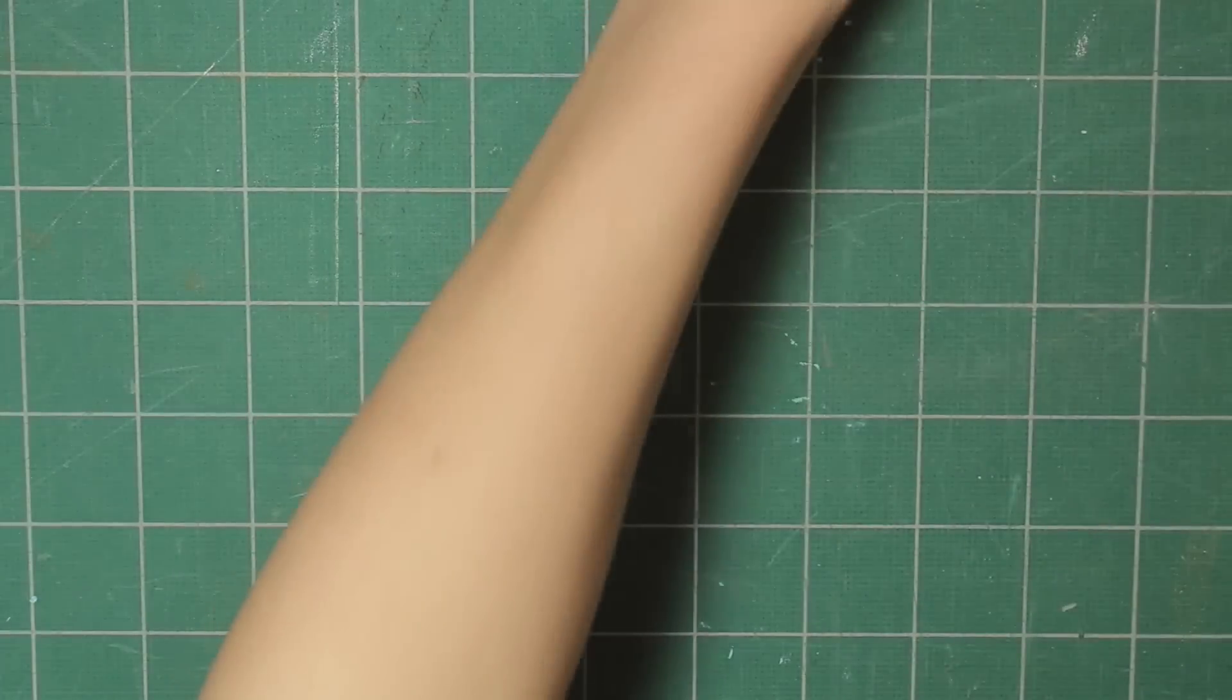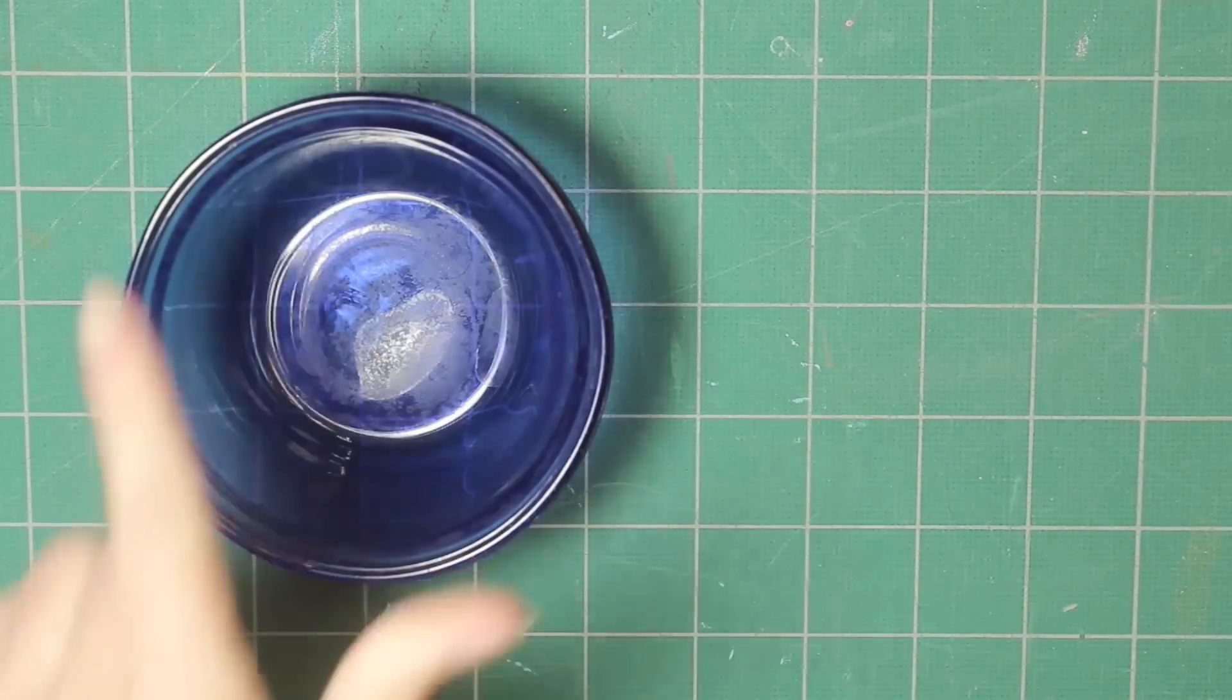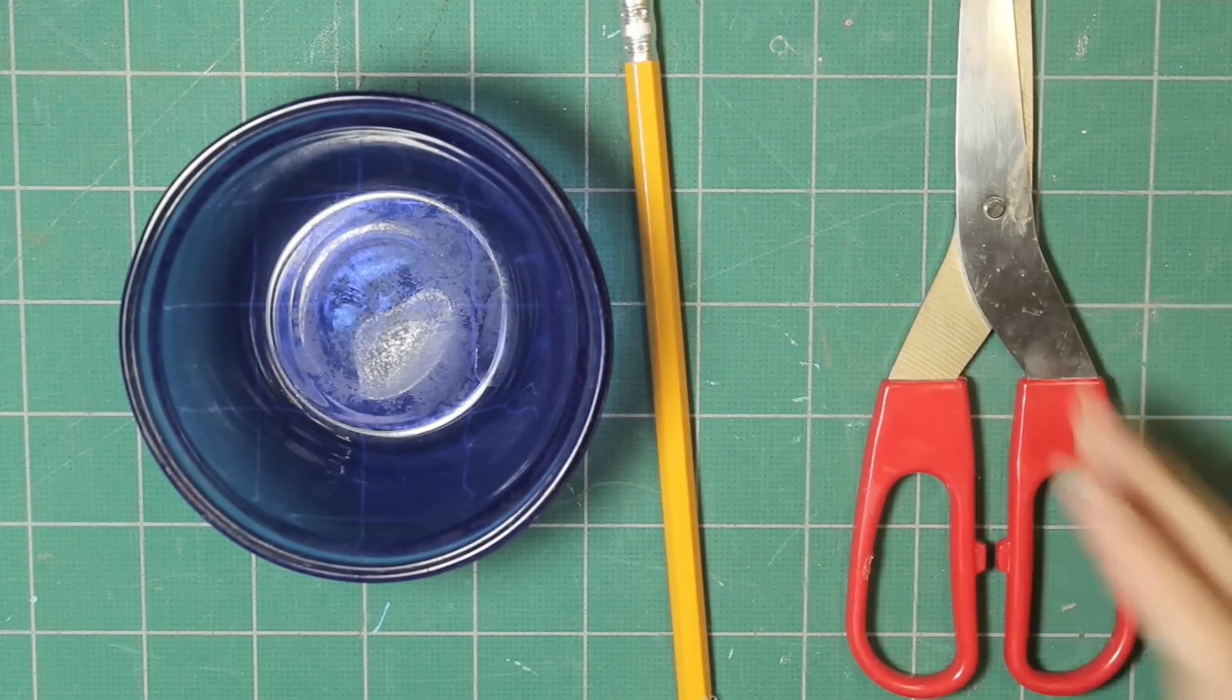You're going to need some cardboard, a small circular object to trace, a pencil, and some scissors.